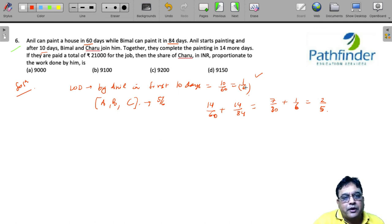So, total work done is 1/6th plus 2 by 5. So, 5 plus 12 is 17 by 30. 17 by 30 of the work is done by Anil and Bimal.